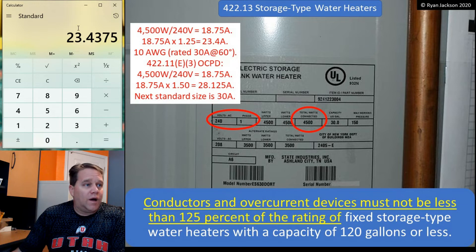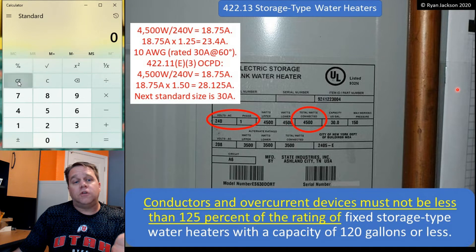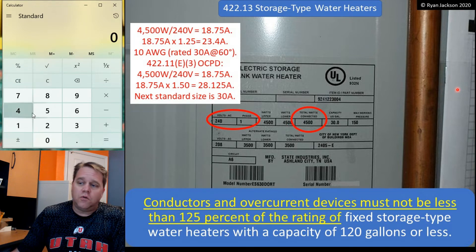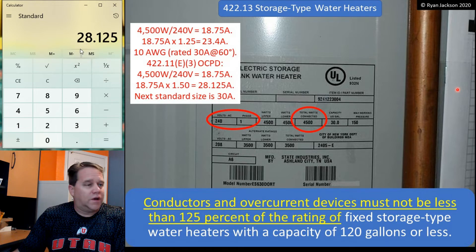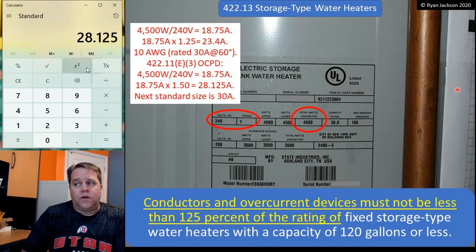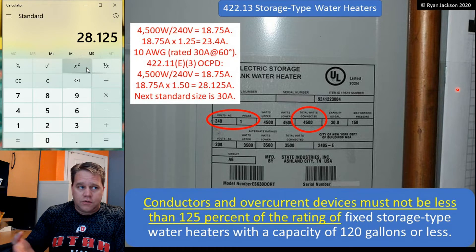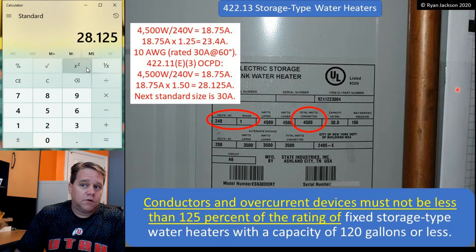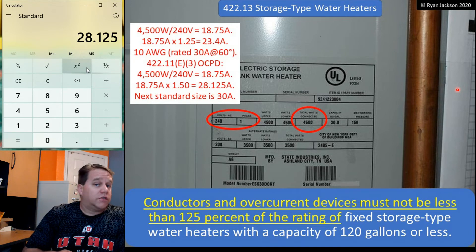25 amp is a standard rating. However, going back to the overcurrent device rules, 422.11 E3 for slightly larger appliances says you have to have at least 125%, but you can actually go up to 150% if you want. 4,500 watts divided by 240 volts, 18.75 times 150% is 28 amps. There's no such thing as a 28 amp breaker. I go to Table 240.6A — that confirms that fact, and the next standard higher rating is 30. So if you wanted to, you could put it on a 30 amp breaker. Either way, I'm using 10 gauge wire because it has to carry 23 amps. I could use 10 gauge wire on a 25 amp breaker or on a 30 amp breaker — both are fine.